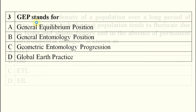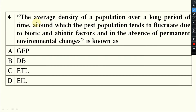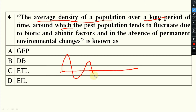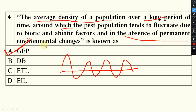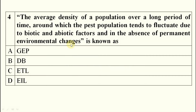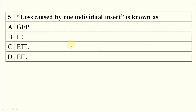Next, a definition is given: the average density of a population over a long period of time around which the pest population fluctuates. This average, in the absence of permanent environmental changes, is the definition of GEP — General Equilibrium Position.